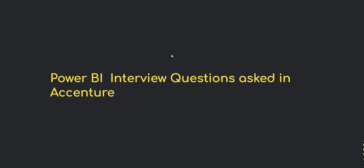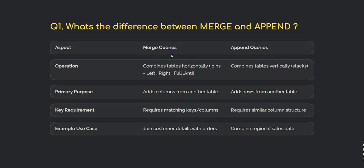What's the difference between merge and append? Merge combines tables horizontally — it's basically a join (left, right, full, inner). Append combines tables vertically. The primary purpose of merge is to add columns from another table, and the primary purpose of append is to add rows from another table.